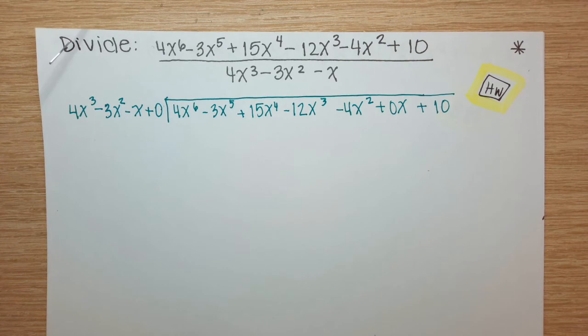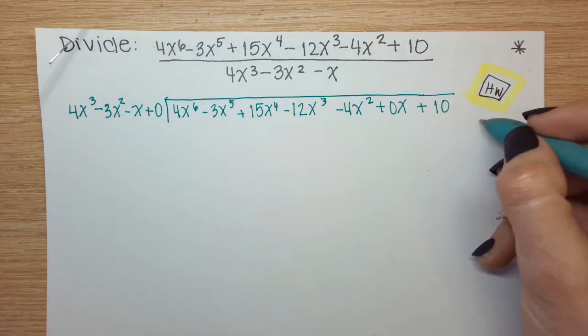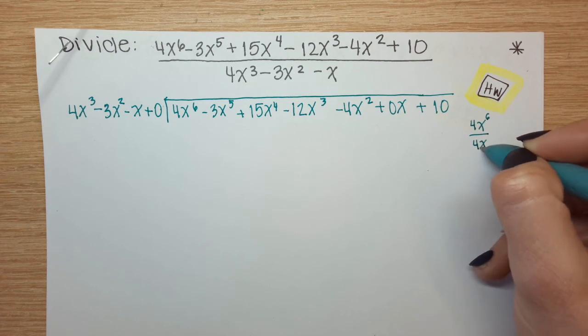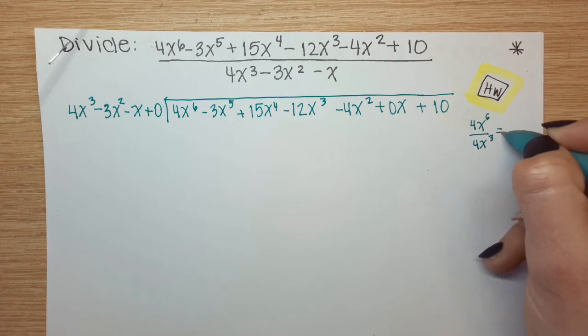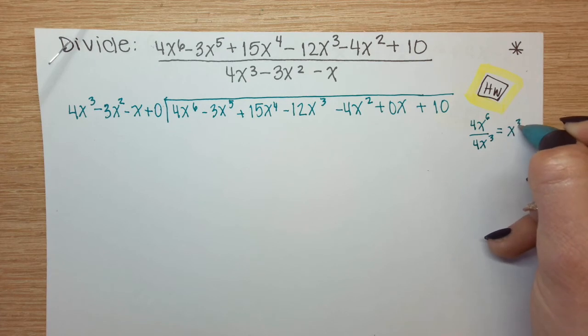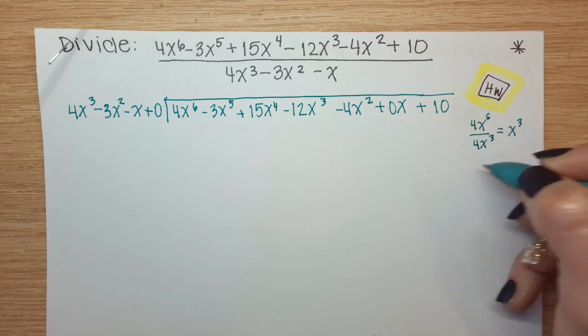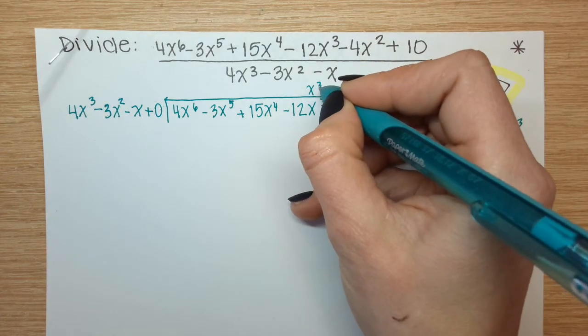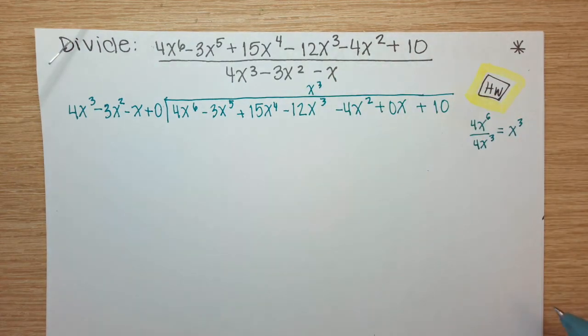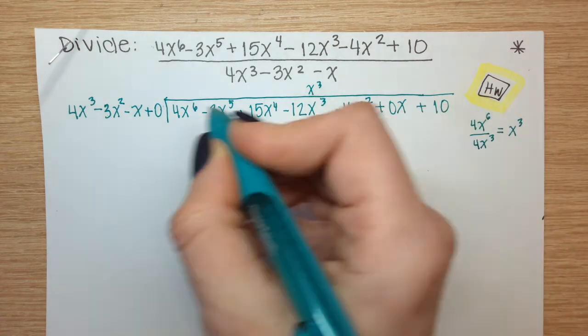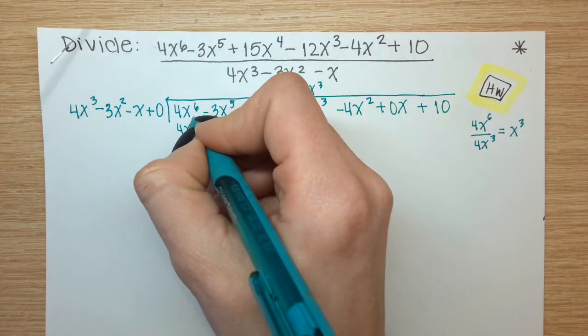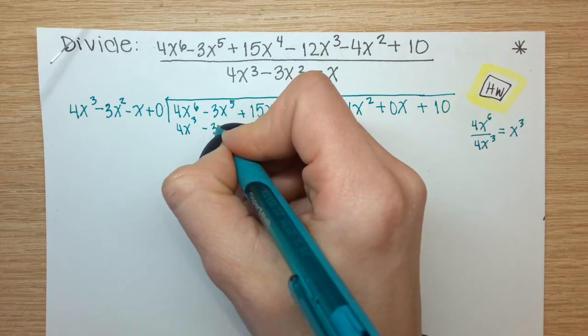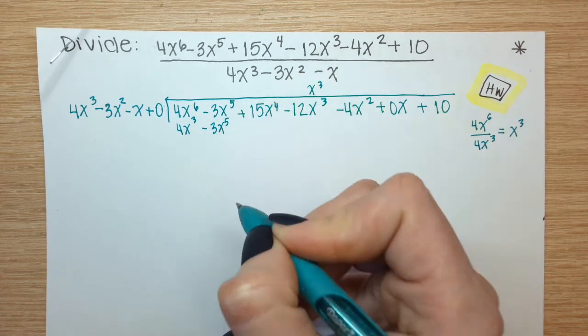So we're going to start our long division by dividing the leading term inside by the leading term outside. We get x to the third. Careful that you remember the rules and those fours reduce. We write that in the correct column. It helps us know when we're done. Multiply it on the side. Properties of exponents, you add your exponents.